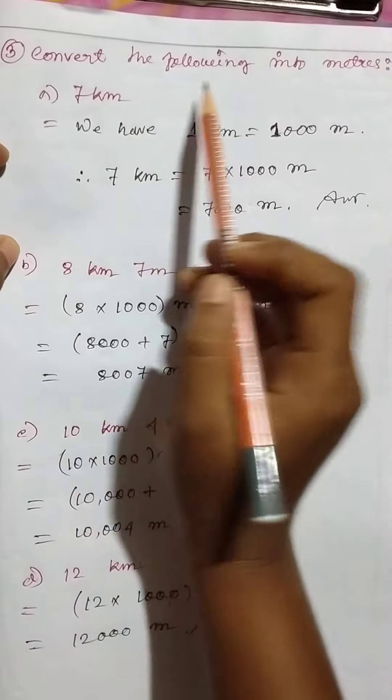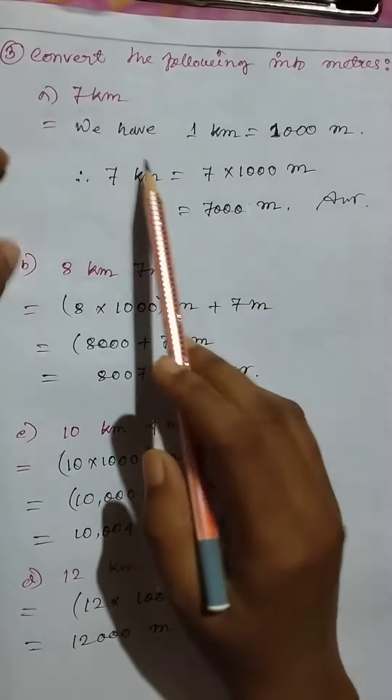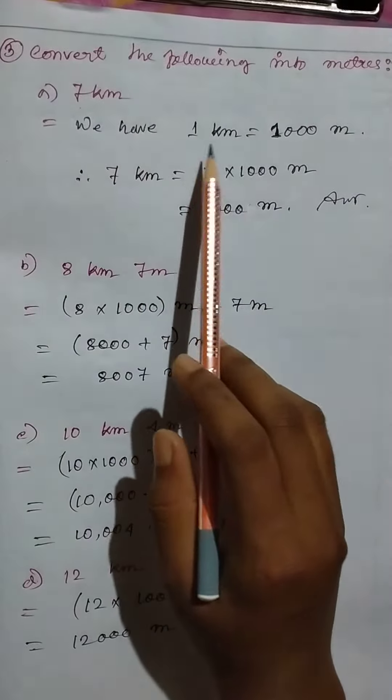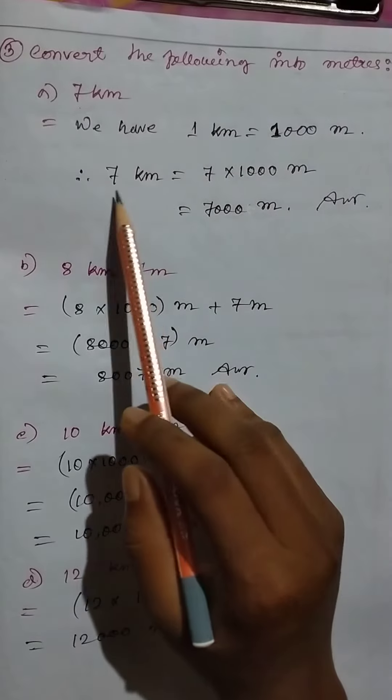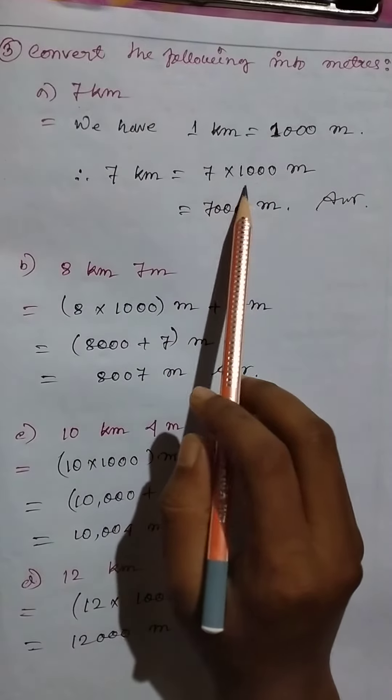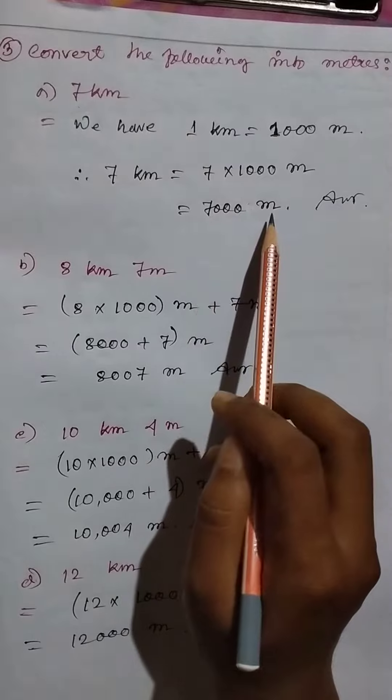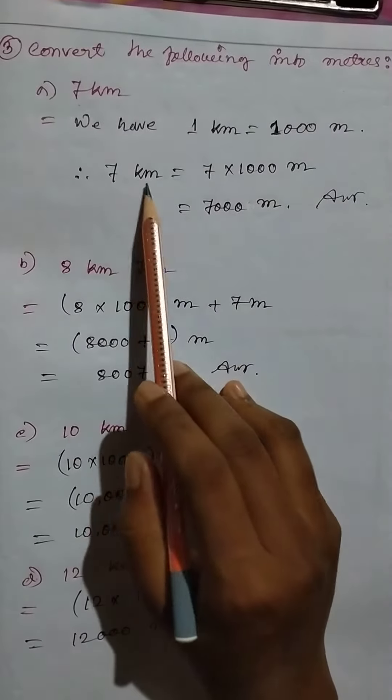Now convert the following into meters. 7 kilometers equal to... We have 1 kilometer equal to 1000 meters. So 7 kilometers equal to 7 times 1000 meters, equal to 7000 meters.